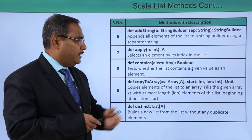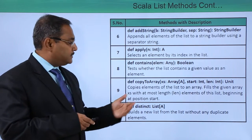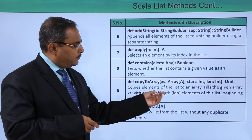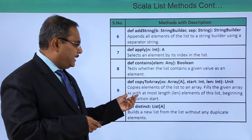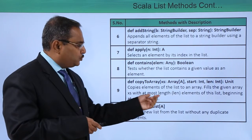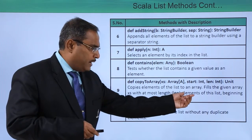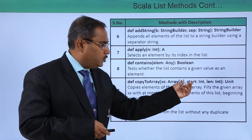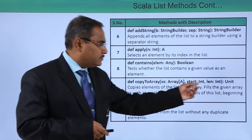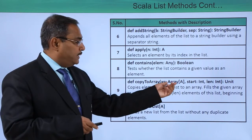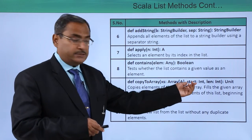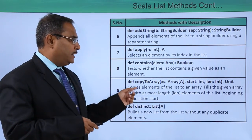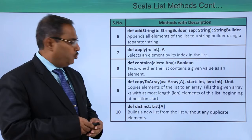We have `apply` which selects an element by its index in the list. Then `copyToArray` copies elements of the list to an array, filling the given array x with at most a specified number of elements beginning at a start position. So here we are passing three parameters: the array, the start position, and the length — that is the number of elements to copy.